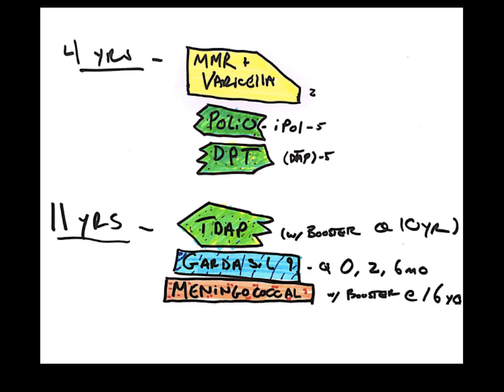So we're going to continue with boosters, Tdap. The tetanus booster and the diphtheria booster will be a constant thing in an adult's life every 10 years.